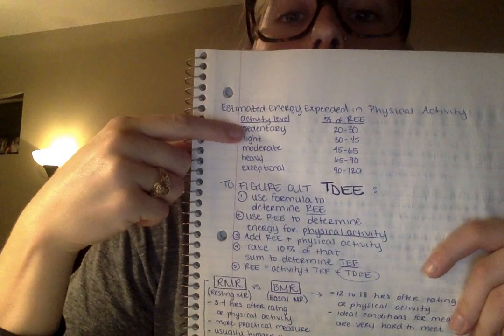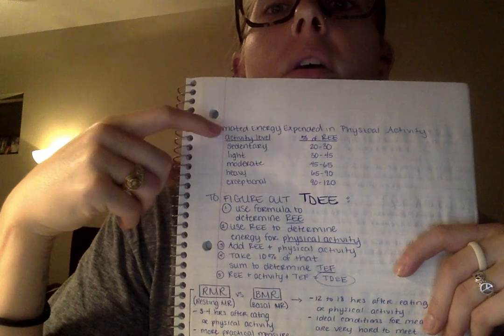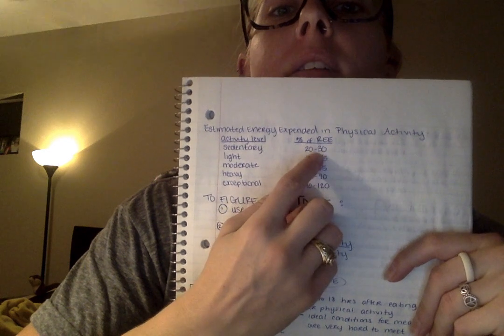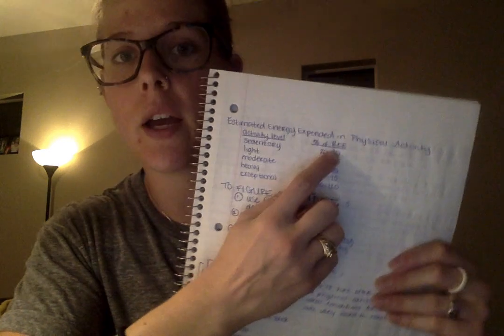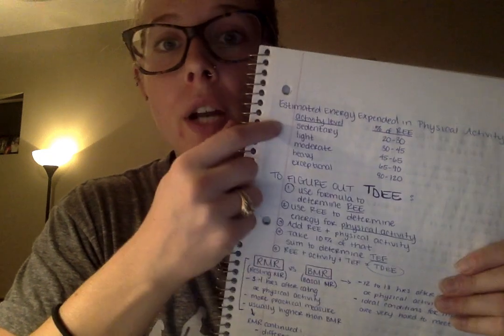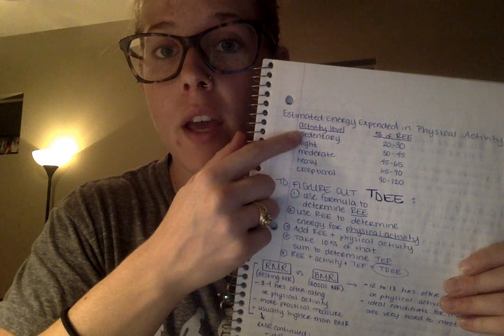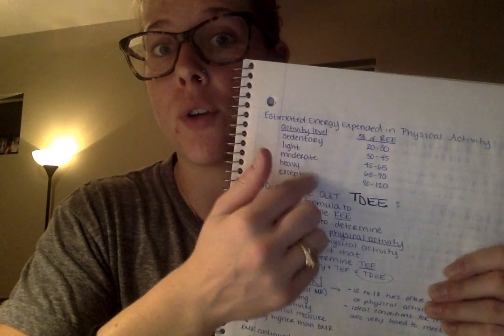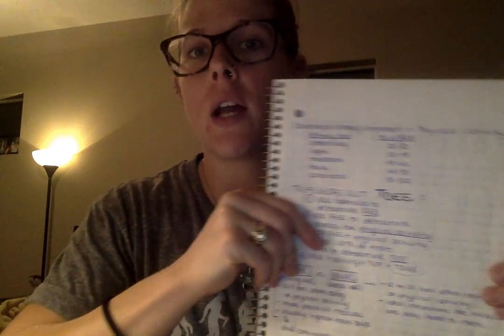The next thing we're going to figure out is physical activity. This goes from sedentary to exceptional — light, moderate, heavy, and exceptional — and is calculated as a percentage of the resting energy expenditure we just calculated. My subject is moderately active, and you'll notice that gives a percentage range of 45 to 65%, which is a fairly big range. All of these categories have big ranges, so you have to decide where you fall and whether you're on the light end or the high end of whichever category you choose.